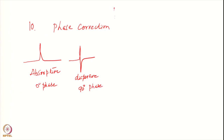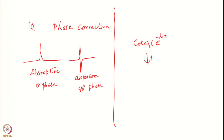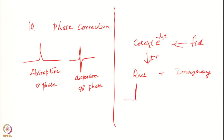In FTNMR we collect the data as cosine(ωᵢt) · e^(−λᵢt). When you Fourier transform this, it generates two components: the real component and the imaginary component. If the FID is of this form, the real part will have a pure absorptive signal and the imaginary part will have the dispersive component.